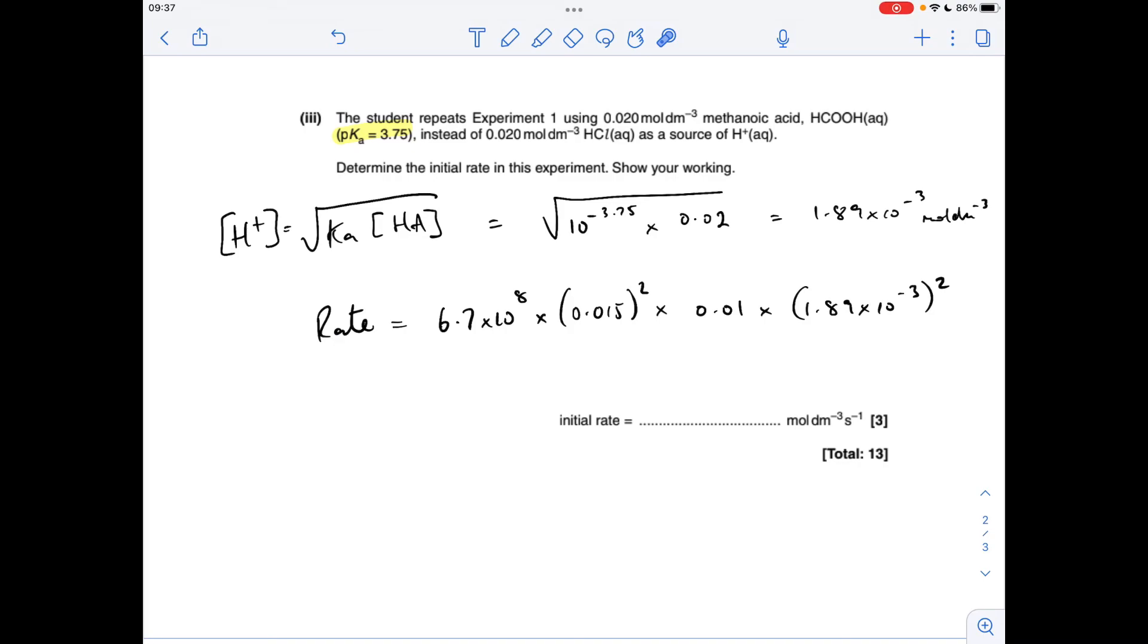And then we just sub the numbers into the rate equation. So we get rate equals, but the k value won't change because this will have been done at the same temperature. The two other concentrations are the same as before for experiment one. The only difference is the H plus concentrations at this value we've just calculated. And that comes out at 5.38 times 10 to the minus 3.